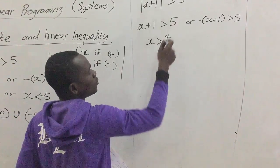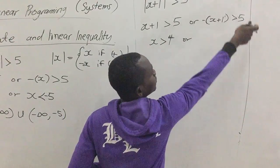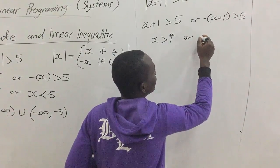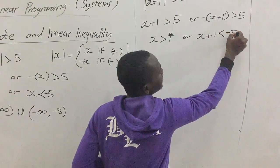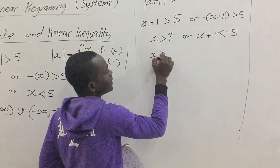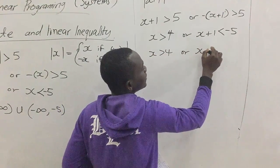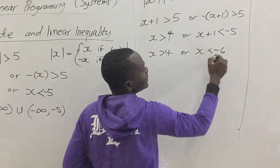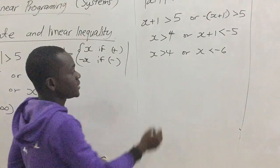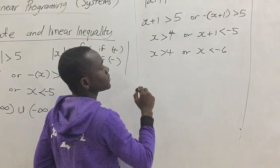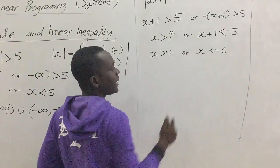We can simplify the first side: x is greater than 4 — the 1 moves to subtract. For the second side, we divide by negative one, getting x plus 1 less than negative 5, so x is less than negative 6. The 1 goes to subtract giving negative 6. Our solution set is x greater than 4 or x less than negative 6.